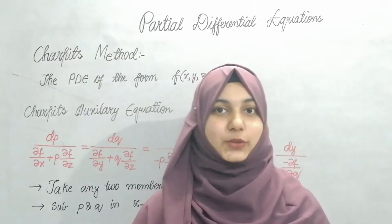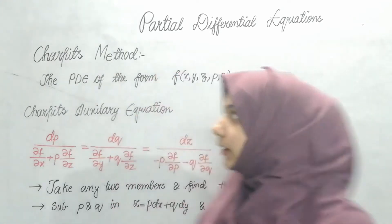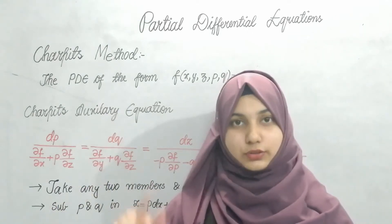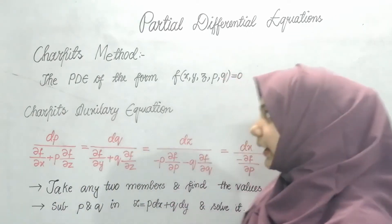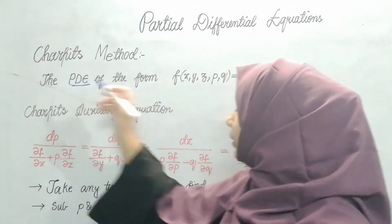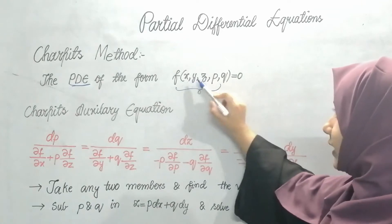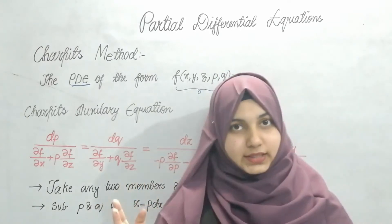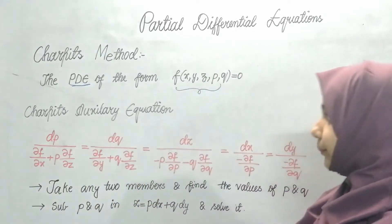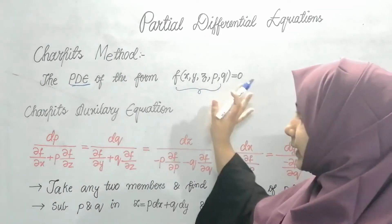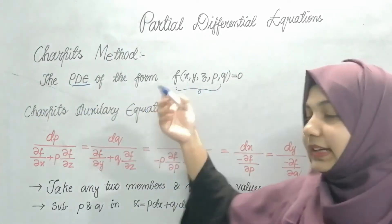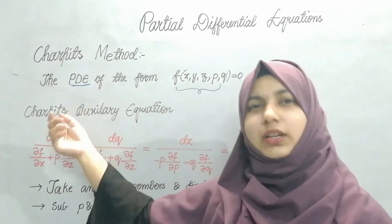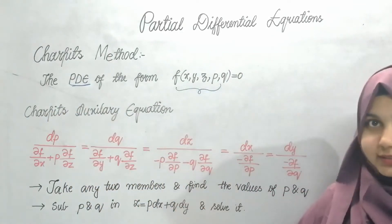Assalamu alaikum everyone. In this video we'll see what Chapit's method is and how to solve it. Chapit's method is used to solve nonlinear PDEs — it is one of the methods to solve nonlinear partial differential equations. My PDE will be of the form f(x, y, z, p, q) = 0. Just like in Lagrange's method we had an auxiliary equation, similarly we have an auxiliary equation in Chapit's method, which is quite lengthy and needs to be memorized.